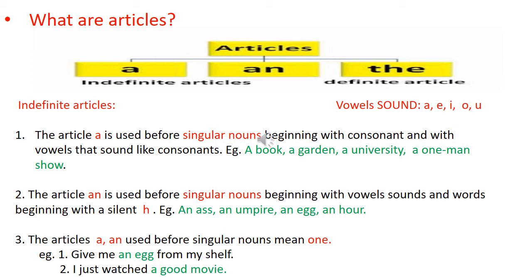Let's go to the third point. The articles A and An used before singular nouns mean 'one.' For example: 'Give me an egg from a chef' — an egg means one egg. Second example: 'I just watched a good movie' — a good movie means one good movie.